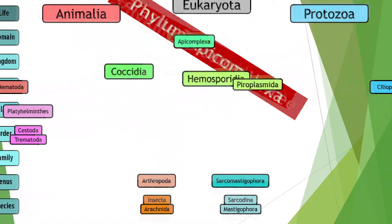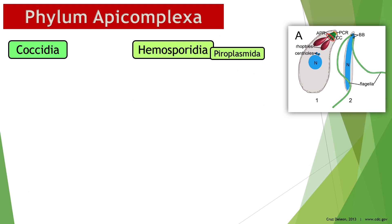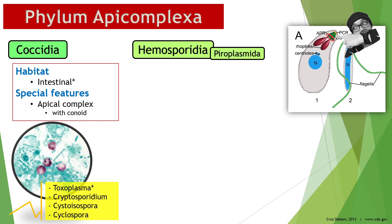Apicomplexans are obligate intracellular parasites. They possess the apical complex, which is a collection of organelles and secretory structures needed to help the parasite infect the host cell. Coccidians are protozoans that generally maintain a circular shape, especially during their cystic or oocyst stage. Coccidians also have a conoid, or a feeding tube, which they use like a straw to feed on the components of other cells. Coccidians generally reside in the gastrointestinal tract of their definitive host, but Toxoplasma's life cycle is more complex and will be discussed in a separate video.